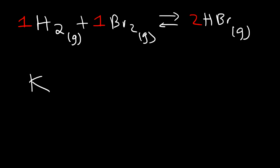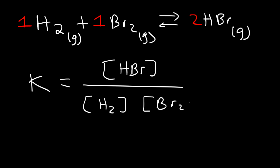So the equilibrium constant K is going to be the ratio of the products to the ratio of the reactants. Now the coefficient for HBr is 2, and for H2 and Br2, it's 1. So we don't need to write anything for that. And so this is the answer.